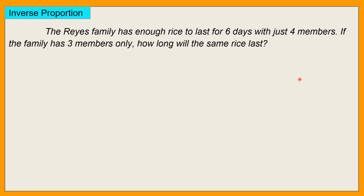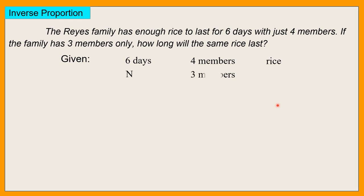Baligtad. Kasi ibig sabihin nun, kung tatlo na lang ang kakain, eh di mas tatagal na yung bigas nila. Given natin dito is 6 days for just 4 members. Within 6 days, maubos nila ang kanilang rice. Kaya lang, kung tatlong members na lang, ilang days na yun — this is N, kasi hindi natin alam. 3 members, pero the same rice ang pinag-usapan. Ang hindi nagbabago dito is the rice.